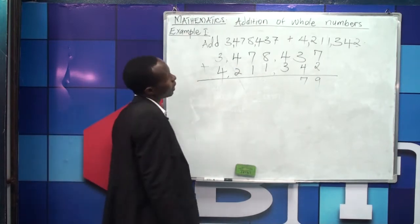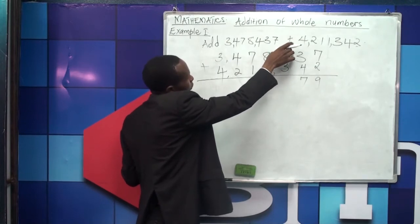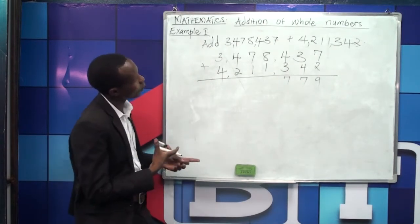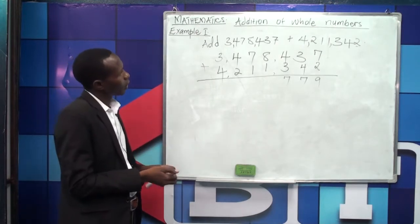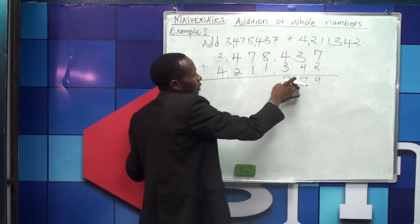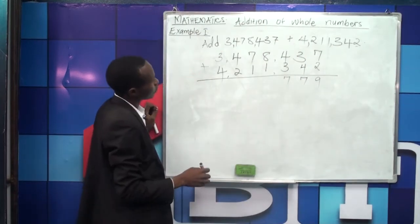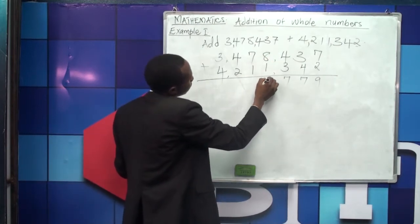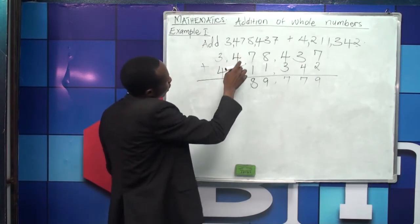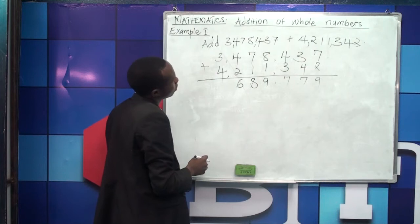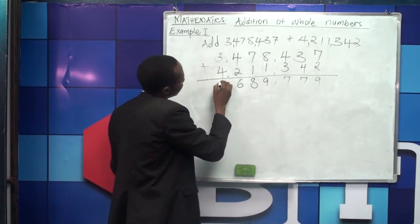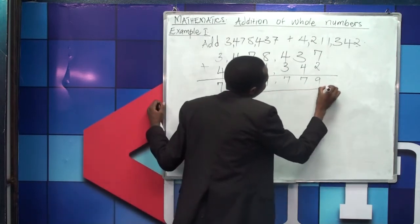Coming to hundreds: 4 plus 3 gives us 7. As we add, we follow the place values — ones are written under ones, hundreds under hundreds. We go to thousands: 8 plus 1 gives us 9. Then 7 plus 1 gives us 8. Then 4 plus 2 gives us 6. Finally, 3 plus 4 gives us 7.